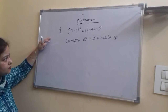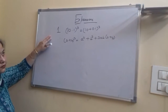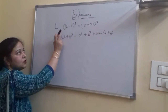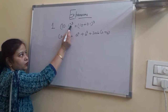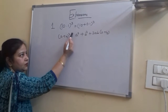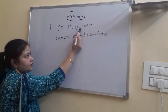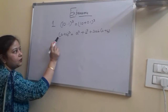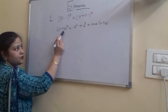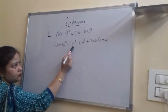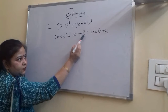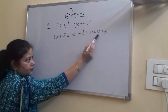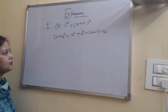Continuing with the chapter expansions, let us understand some more examples. The question is 10.1 whole cube, which is 10 plus 0.1 whole cube. The formula is a plus b whole cube, that is a cube plus b cube plus 3ab into a plus b.